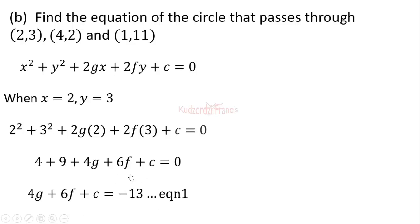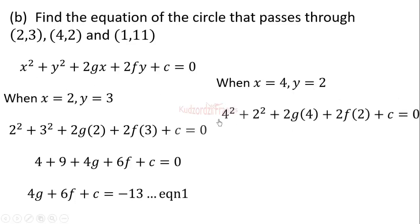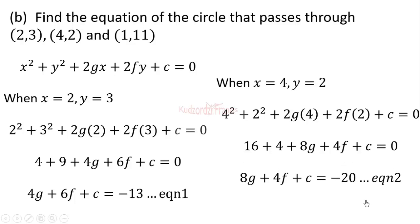For the second point (4, 2), this point must also satisfy the equation. Plugging in x equals 4 and y equals 2, and simplifying, gives equation 2: 8g plus 4f plus c equals negative 20.